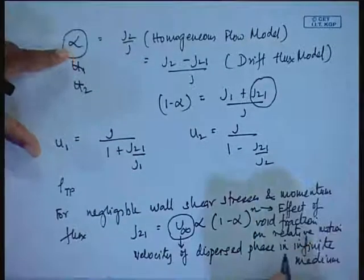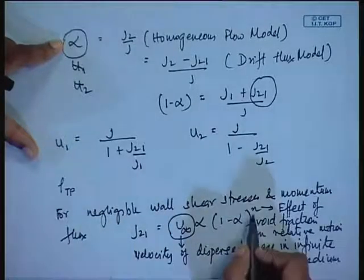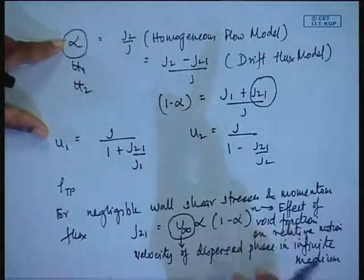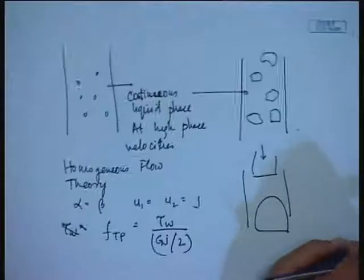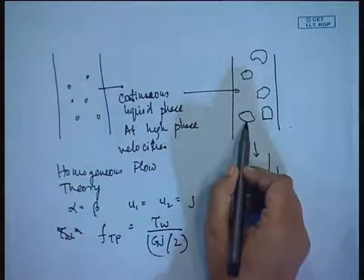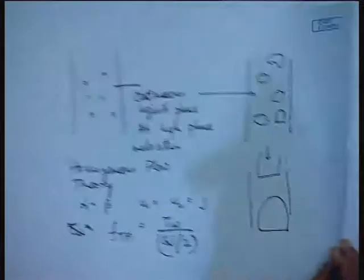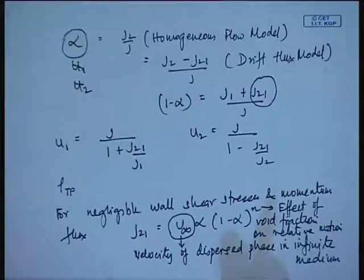The curve of j₂₁ can be approximated by this particular equation for a wide variety of fluid pairs and fluid properties, where u_∞ and n take different values for different flow situations. We cannot adopt a unique value of u_∞ and a single value of n — the rise velocity of a small bubble in an infinite medium cannot be equal to that of a large bubble. So u_∞ and n must take different values to incorporate different ranges of the bubbly flow pattern.